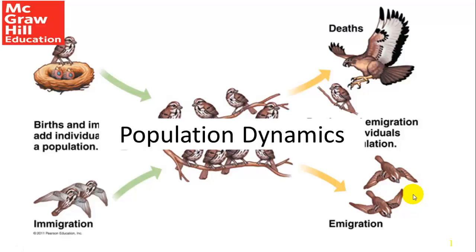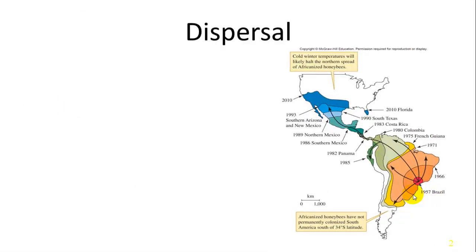So, population dynamics. We're talking about populations. A population is a group of individuals of the same species within an area. We're going to talk about things that affect how they grow, how they shrink, how they move, how they are distributed, and a lot of that has to do with dispersal.